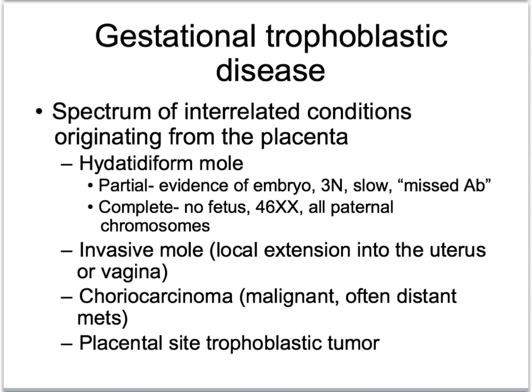An invasive mole has local extension into the uterus or vagina. Choriocarcinoma is malignant, with often distant metastases most commonly to lung, liver, brain, or vagina. Placental site trophoblastic tumor is the most rare.